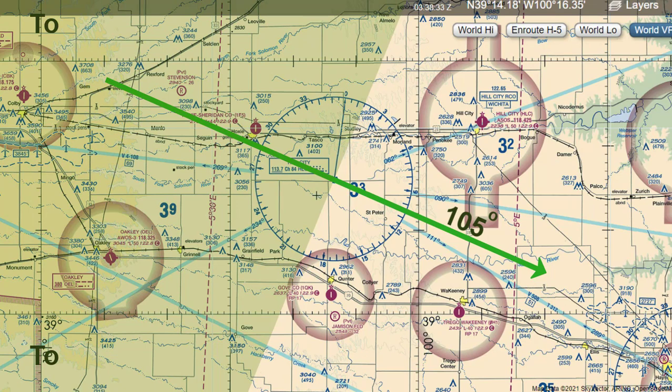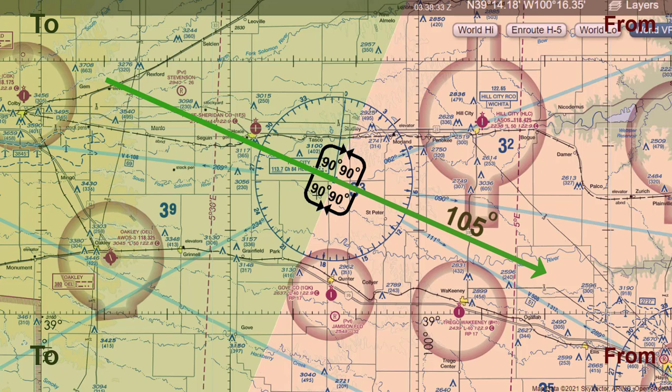The to side of the 105 degree radial is represented in a faded green color. The from side of the radial is represented in a faded red color. One thing I did not mention in the prior two VOR Navigation examples is that the to and from sides are always 90 degrees to the radial we are using for reference. I hope that adds some clarity in case you were wondering how the to and from side relate to the radial being referenced.